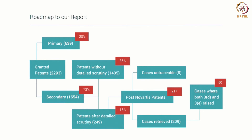We found that 28 percent pertain to primary patents. Of the numbers we analyzed — 2,293 — 1,654, that is 72 percent, pertain to secondary patents, of which 85 percent — a substantial portion — were granted without detailed scrutiny. Only 15 percent went through a detailed scrutiny, which is a written order by the IPO that a third person can scrutinize.